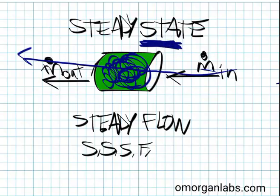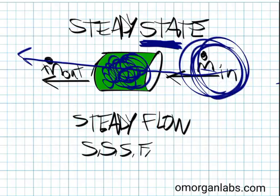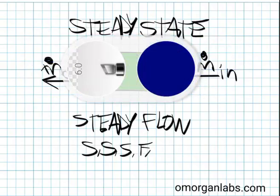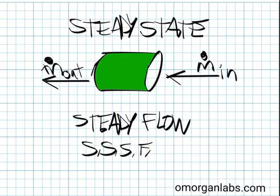And the steady flow is the M dot, we call it M dot mass flow. The flow in is going to equal the flow out. Steady state, steady flow. So, we've got to talk about M dot.